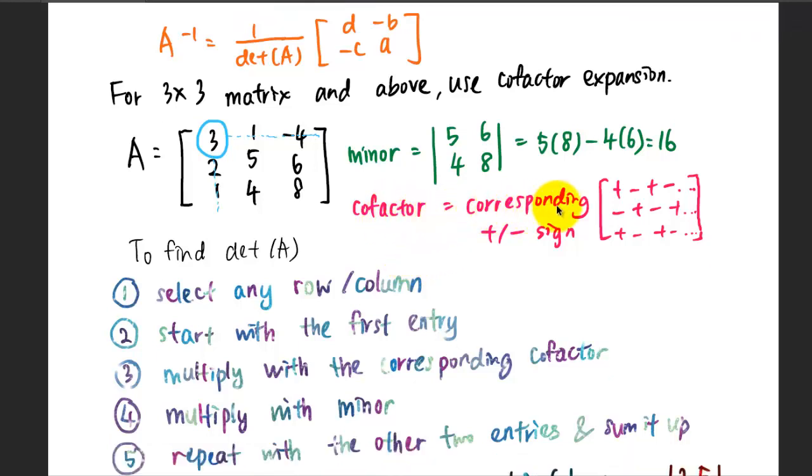The third aspect is the cofactor. The cofactor is the corresponding plus minus sign associated with that particular entry. The cofactor sign will start from plus followed by negative, plus negative, and for the second row will start from negative, plus, negative, plus, and the third row will be plus, negative, plus, negative. The plus and negative signs alternate with each other. You just need to know we will always start with the positive.